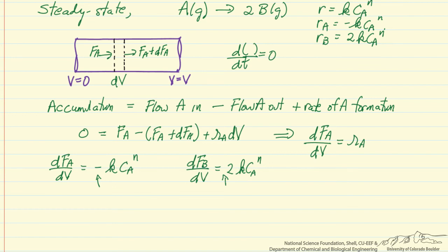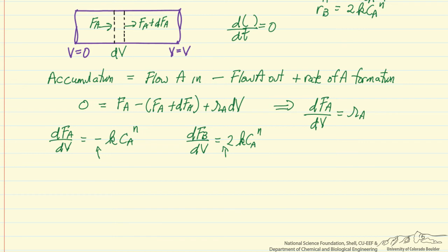It is much more convenient to think about solving these problems numerically, so writing down a mole balance for each species makes it easier to eventually end up with a set of equations we can solve numerically. This is a gas phase reaction in which the number of moles changes as we move down the reactor, because one mole of A makes two moles of B, so we have to account for this because it results in a volumetric flow rate change — more moles occupy more volume, so the velocity is increasing as we move down the reactor.